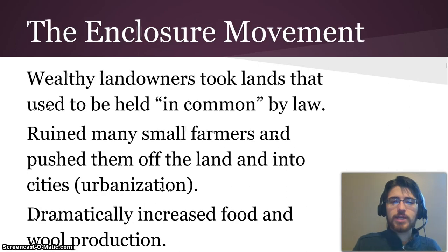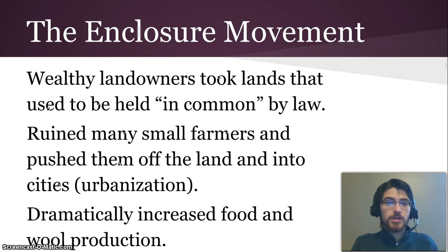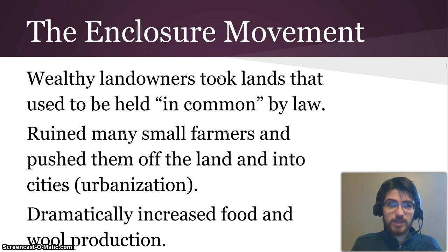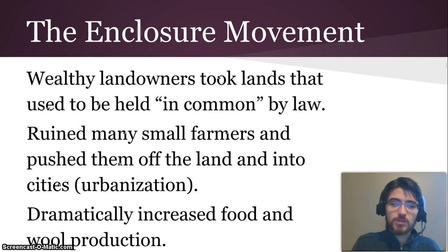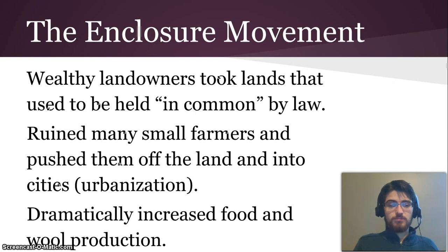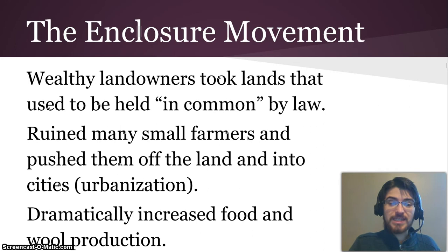The enclosure movement: wealthy landowners took lands that used to be held by everyone in a village in common, so anyone who wanted to could graze their livestock there. But then the landowners took it by law, fenced it off, and made it just their own, deciding exactly what they wanted to do with it. It ruined many small farmers because they couldn't graze their livestock there anymore. It pushed them off their land, large landowners bought those people's land, and all of the small farmers were pushed into the cities where they worked in factories. When the large landowners consolidated their farms, it allowed them to produce food and wool much more easily and efficiently, increasing food and wool production.